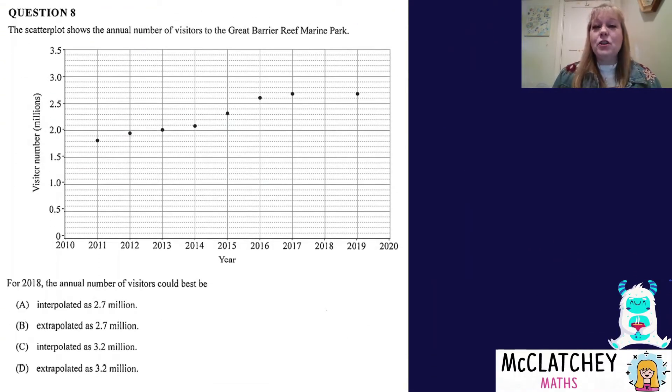It was question 8. The scatter plot shows the annual number of visitors to the Great Barrier Reef Marine Park. It's always a good idea to have an inspection of the scatter plot before you read the question. We can see on the x-axis, that's our horizontal axis, we've got years extending from 2010 to 2020. And on our y-axis, which is our vertical axis, we've got visitor numbers in millions. So it's not two people that visited the park, it was two million people.